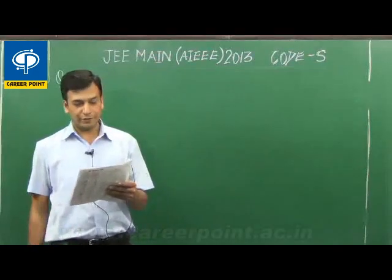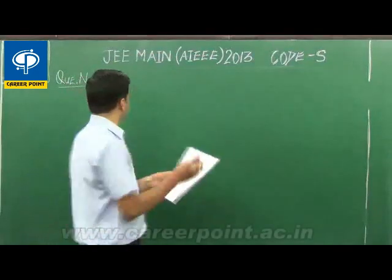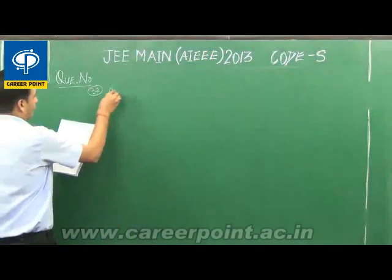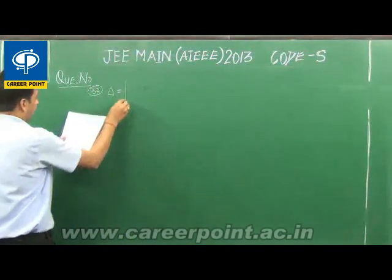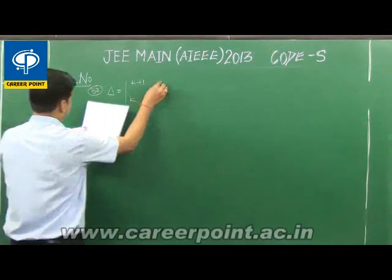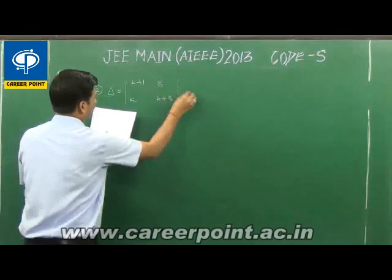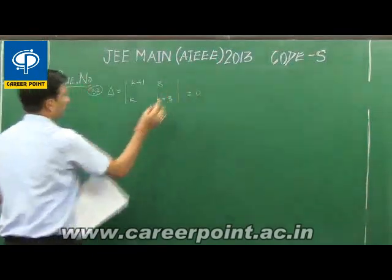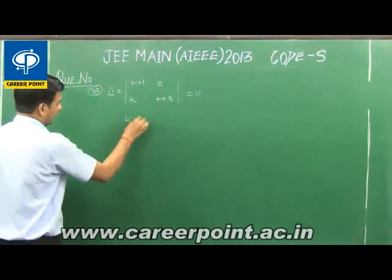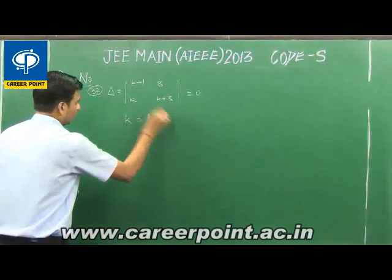We need to find the number of values of k for which the system of equations has no solution. Setting delta equal to zero using the determinant with entries k+1, k, and 8k+3, and solving this determinant, we get k equal to 1 and k equal to 3.